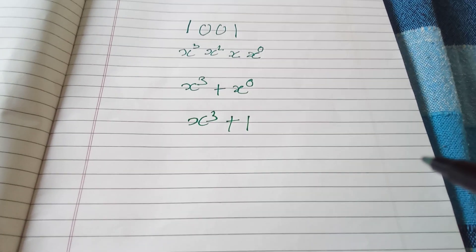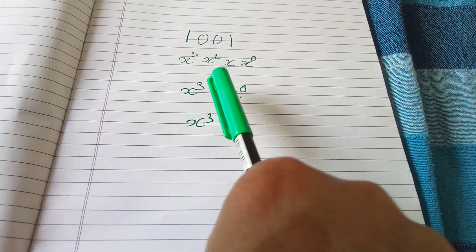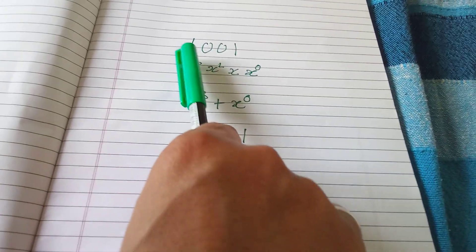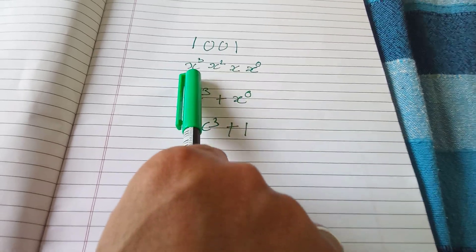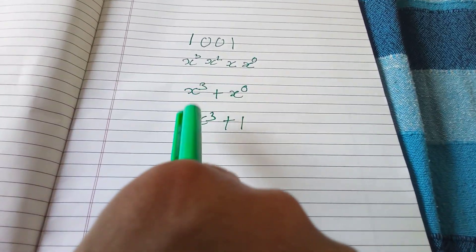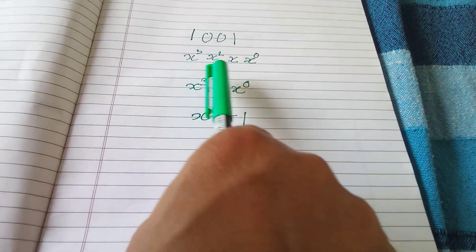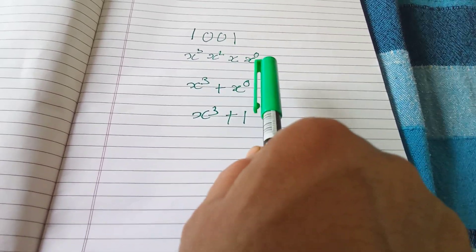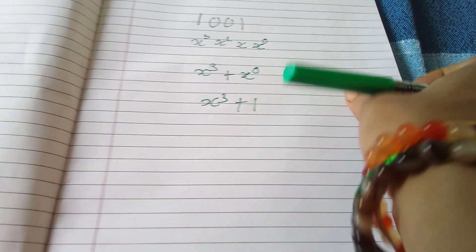These are the coefficients of these powers. So x³ is 1, that's why that is appearing in your polynomial. x² coefficient is 0, then x coefficient is 0, and x⁰ coefficient is 1.